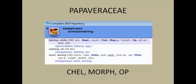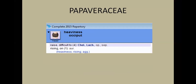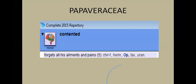Another rubric is 'heaviness of occiput, difficult to raise the head,' which contains only four remedies — two from Papaveraceae: Chelidonium and Opium. Then there is 'contented, forgets all ailments and pains,' where the patient forgets all complaints and sufferings and is in a totally contented state. This rubric has only five remedies, two of which — Heroinum and Opium — belong to Papaveraceae.